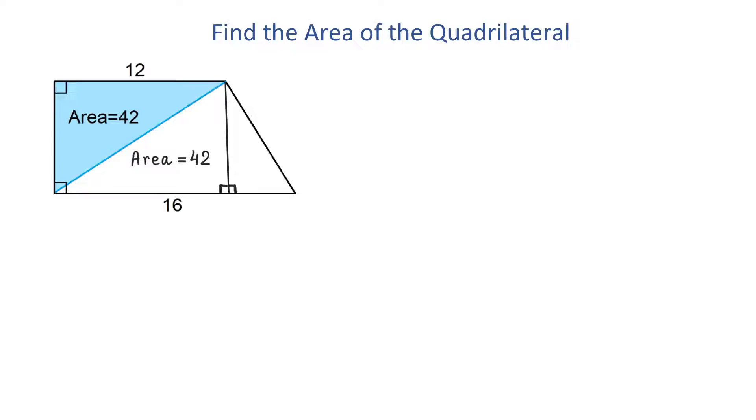And now, what is left is to find the area of this small triangle, and to find this area, we need to know at least two sides. If the bottom side of this quadrilateral is 16 units, then to find the bottom side of this triangle, we will subtract 16 minus 12. Then, this side is equal to 4.